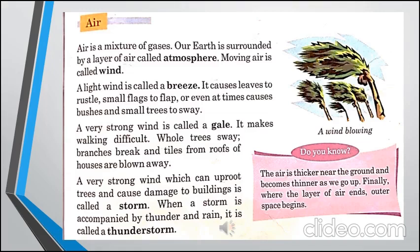پھر اس آندھی کو مزید خطرناک صورت میں لے جائیں تو وہ طوفان کی صورت اختیار کر لیتا ہے جس میں بہت strong trees uprooted ہو جاتے ہیں اور پوری buildings damage ہو جاتی ہیں یا گر جاتی ہیں۔ اس کو ہم طوفان کہتے ہیں۔ جب یہ strong rain کے ساتھ مل کے آتا ہے تو اور خطرناک صورتحال اختیار کر لیتا ہے جس کو ہم thunder storm کہتے ہیں۔